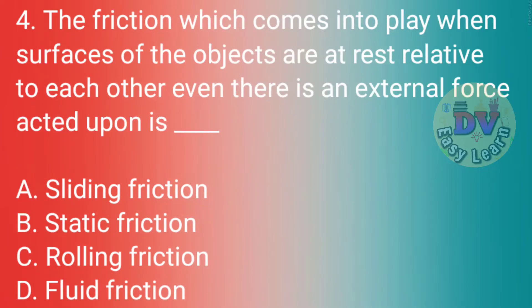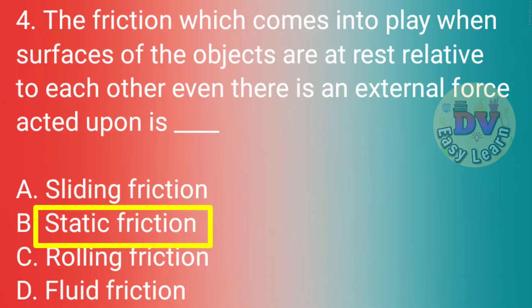Q4. The friction which comes into play when surfaces of objects at rest related to each other, when there is an external force acted upon, is? Correct answer: Static friction.